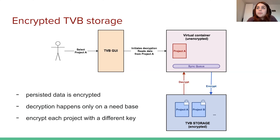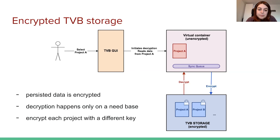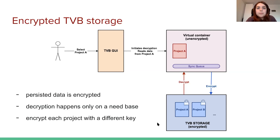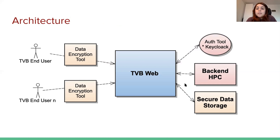When the project is considered no longer in use, TVB either re-encrypts and deletes the decrypted copy if updates were made to that project, or simply deletes the decrypted copy if no updates have been done. Each project is encrypted with a different key to mitigate the risks of a data breach. We also use a different encryption mechanism than the one used at upload time, again to mitigate the risks of data being breached.